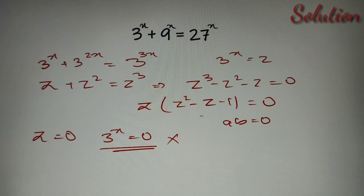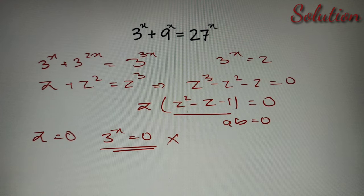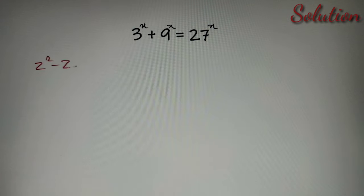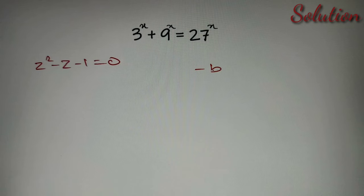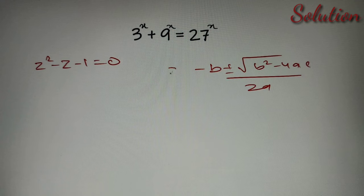So we'll get a solution from b equals zero, that is z squared minus z minus one is equal to zero. We can find the value of z using the Sridharacharya formula. If you don't know it, the formula is: minus b plus or minus the square root of (b squared minus 4ac), all divided by 2a, which gives us the value of z in this equation.